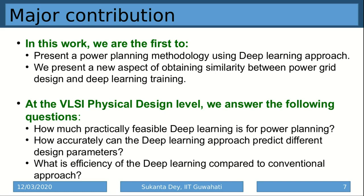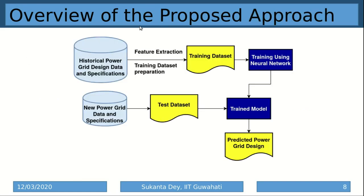At the VLSI physical design level, we answer the following questions: How practically feasible is deep learning for the power planning phase? How accurately can the deep learning approach predict different design parameters while still satisfying the allowed IR drop and electromigration margin? And what is the efficiency of the deep learning approach compared to the standard power planning phase?